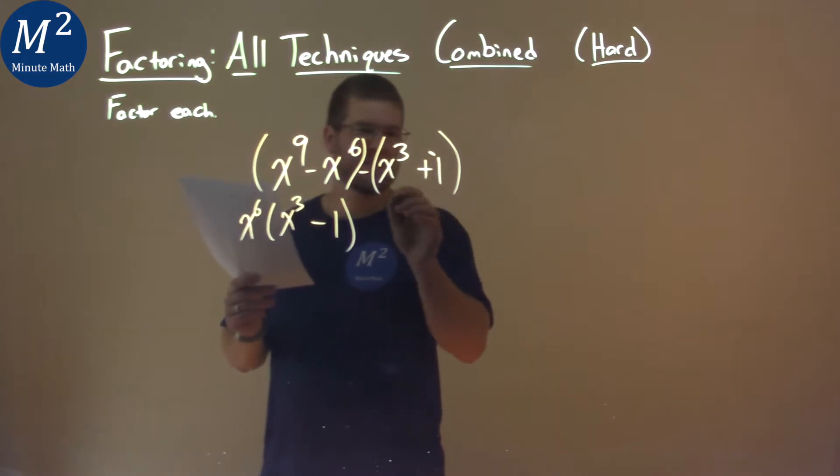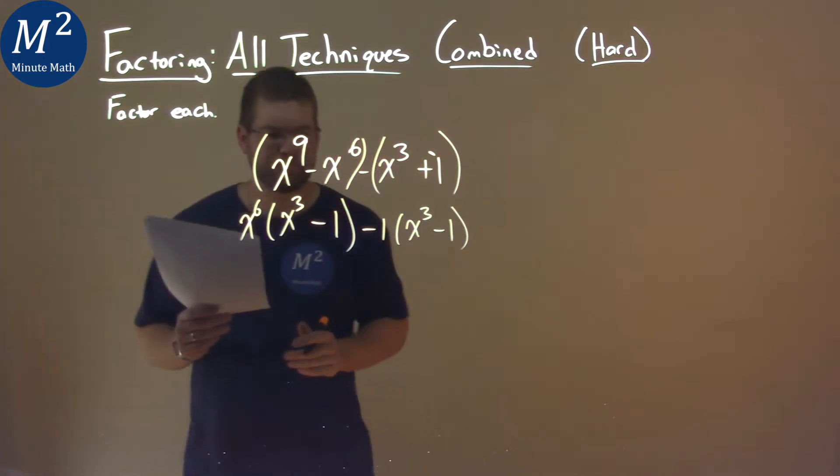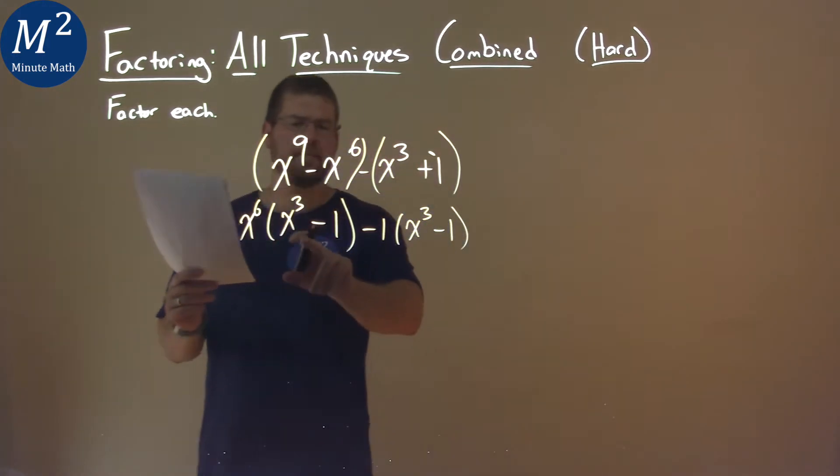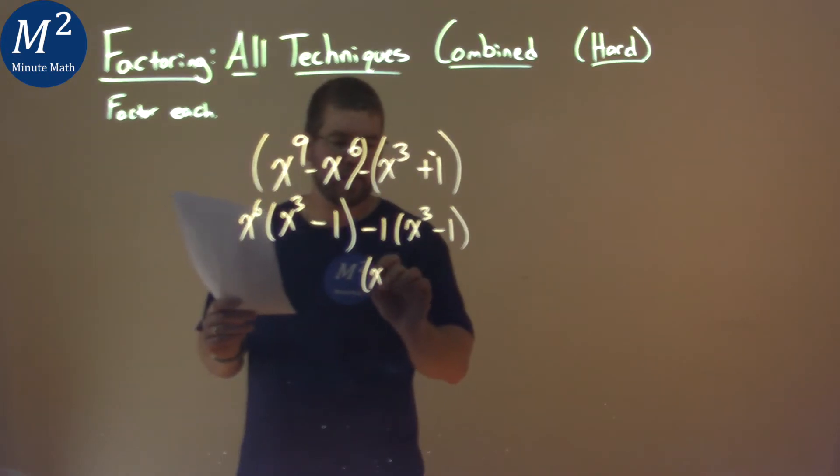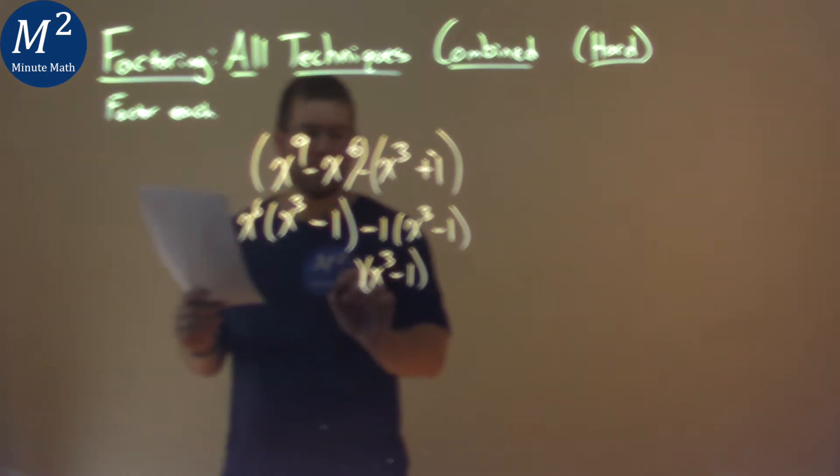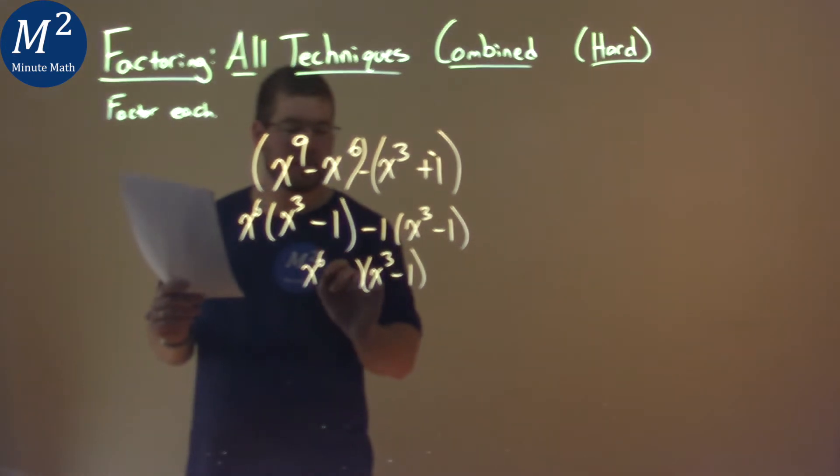The right one, there's nothing really common, but I'm going to pull out a one so we can see it, and we have an x to the third minus one like this. Now, hopefully you can see, x to the third minus one is written twice. So this is our grouping. We pull that out, x to the third minus one, and we're left with that x to the sixth minus one.